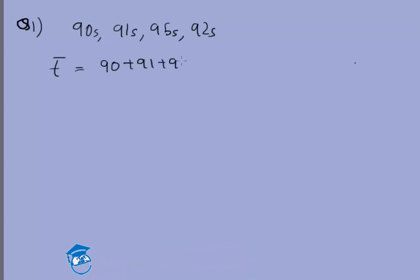So first we calculate the average value. Time period average will be equal to 90 plus 91 plus 95 plus 92 divided by 4, and that turns out to be 92.